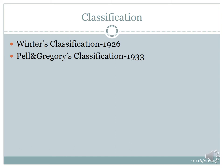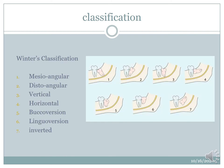Winter's classification and Pell & Gregory classification are the two most common classifications followed to classify impacted mandibular molars. Winter's classification is based on the long axis of the tooth — whether the impacted tooth is mesially tilted, which makes it mesiangular; if distally tilted, it is distangular; if below the level of the occlusal plane it becomes vertical; if horizontally placed almost at a 90-degree angle to the second molar it is horizontal. It can also be buccoversion, linguoversion, or inverted.